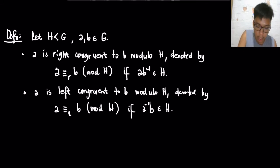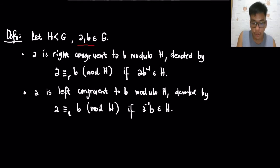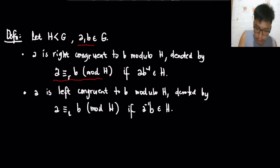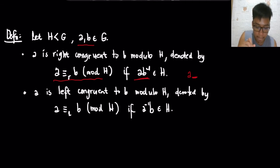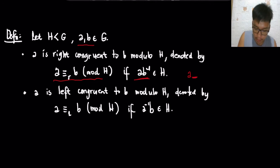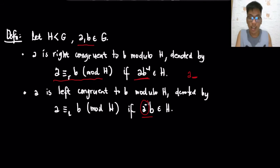Assuming that you have a subgroup H in a group G, and elements a and b are coming from G, then we say that a is right congruent to b modulo H — the condition here is that ab⁻¹ is in H. When we say a is left congruent to b modulo H, then a⁻¹b is in H — so a is on the left of b in that case.